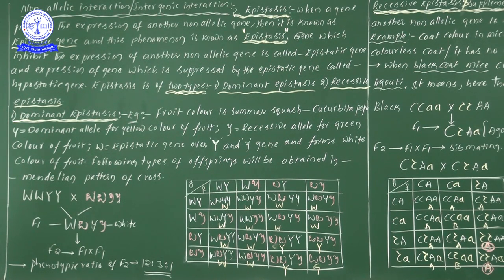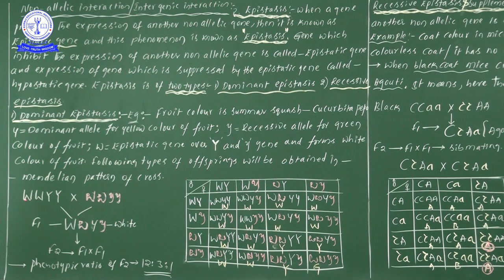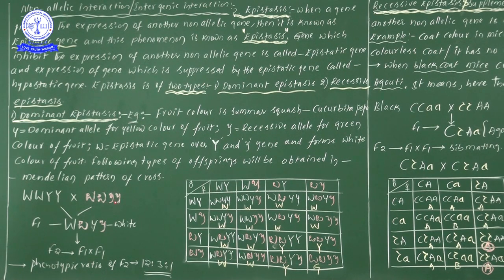When we take a dihybrid cross here, even though both genes are present, what character is expressed? Only white. Why? Because capital W is there — capital W suppresses or prevents the expression of capital Y. So this particular parent color is white.